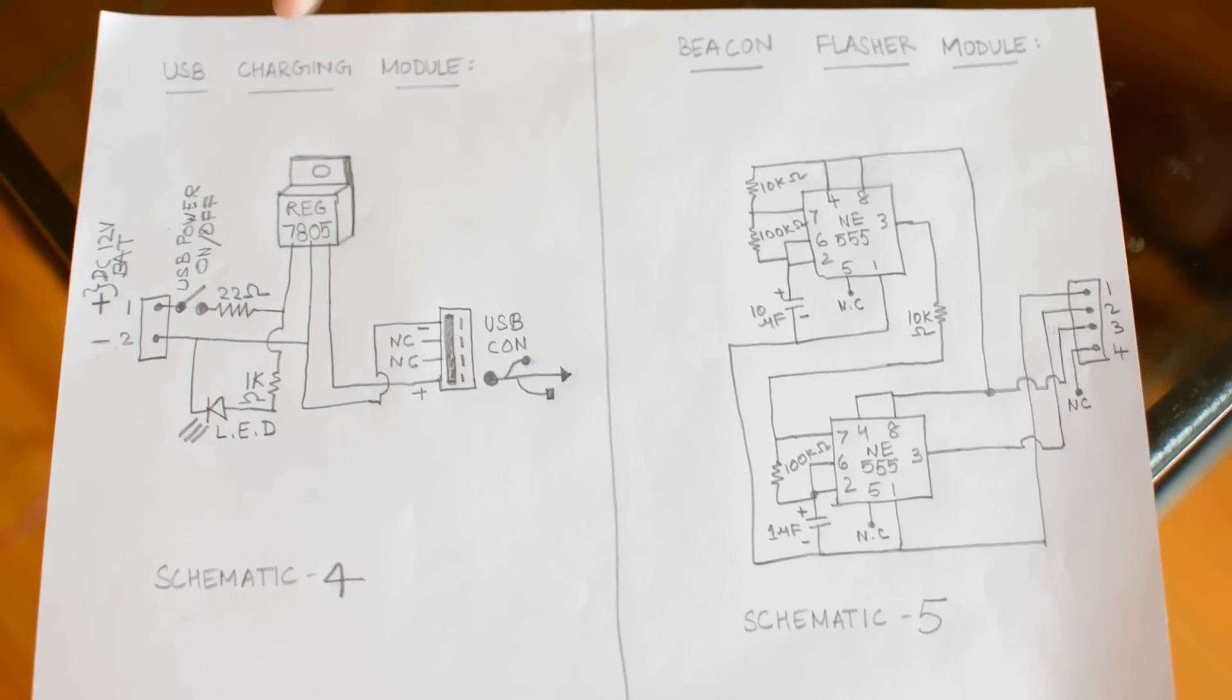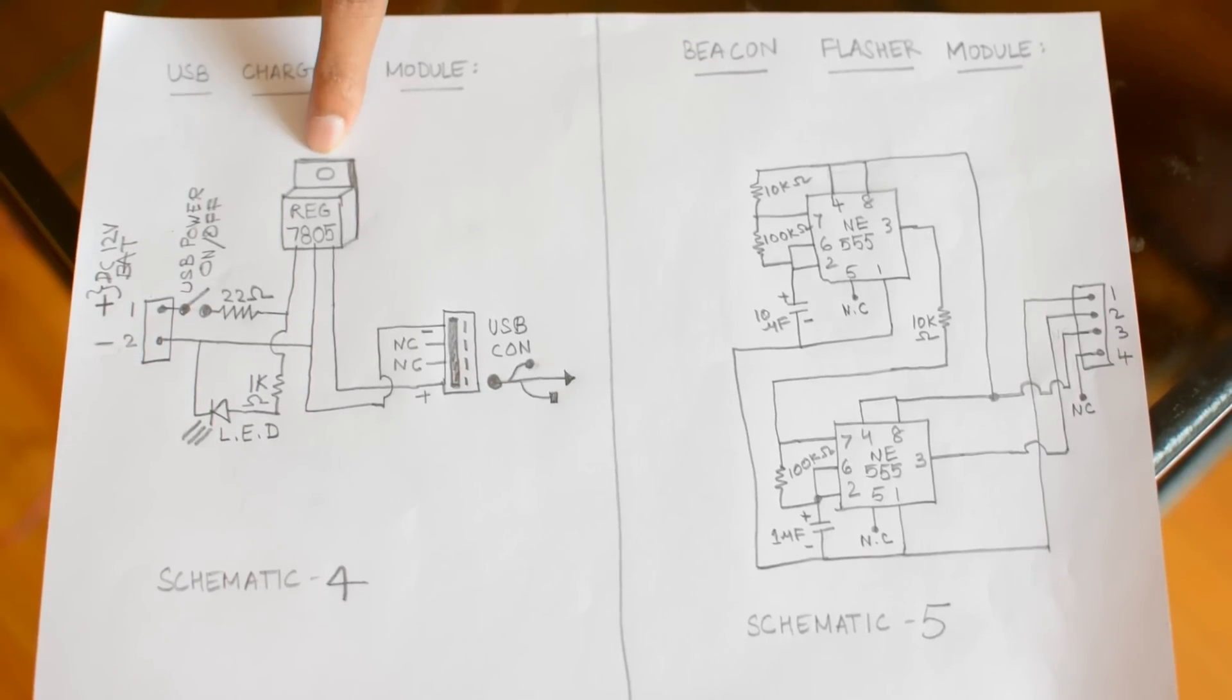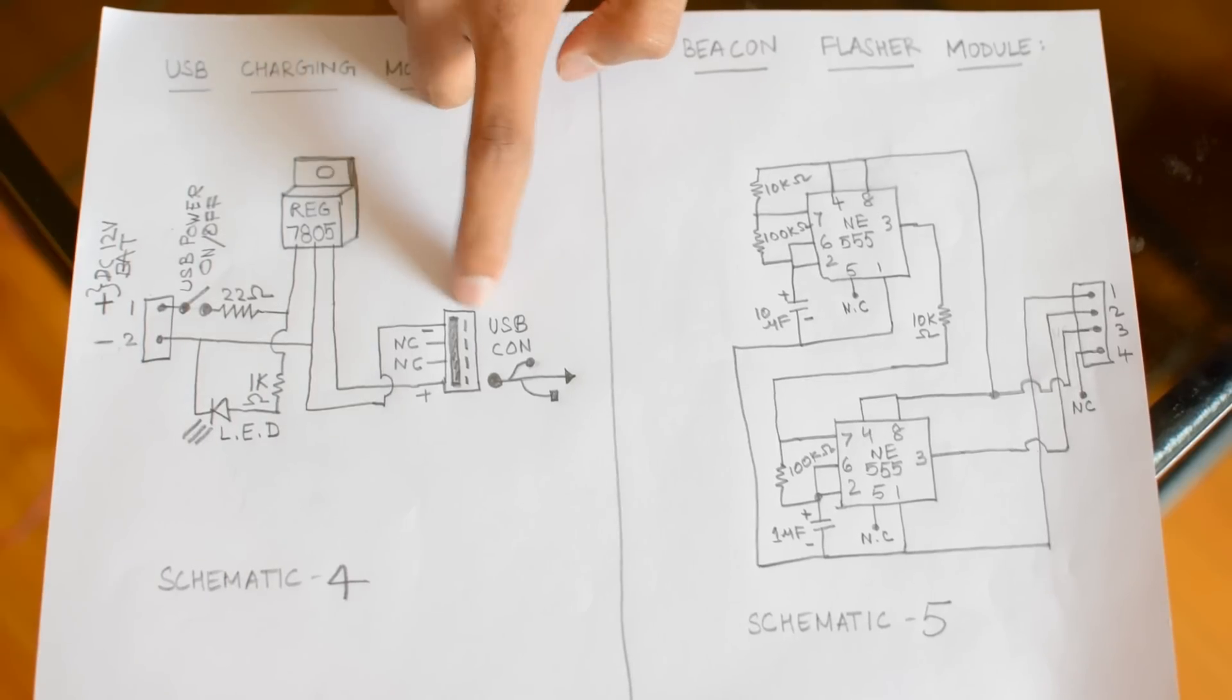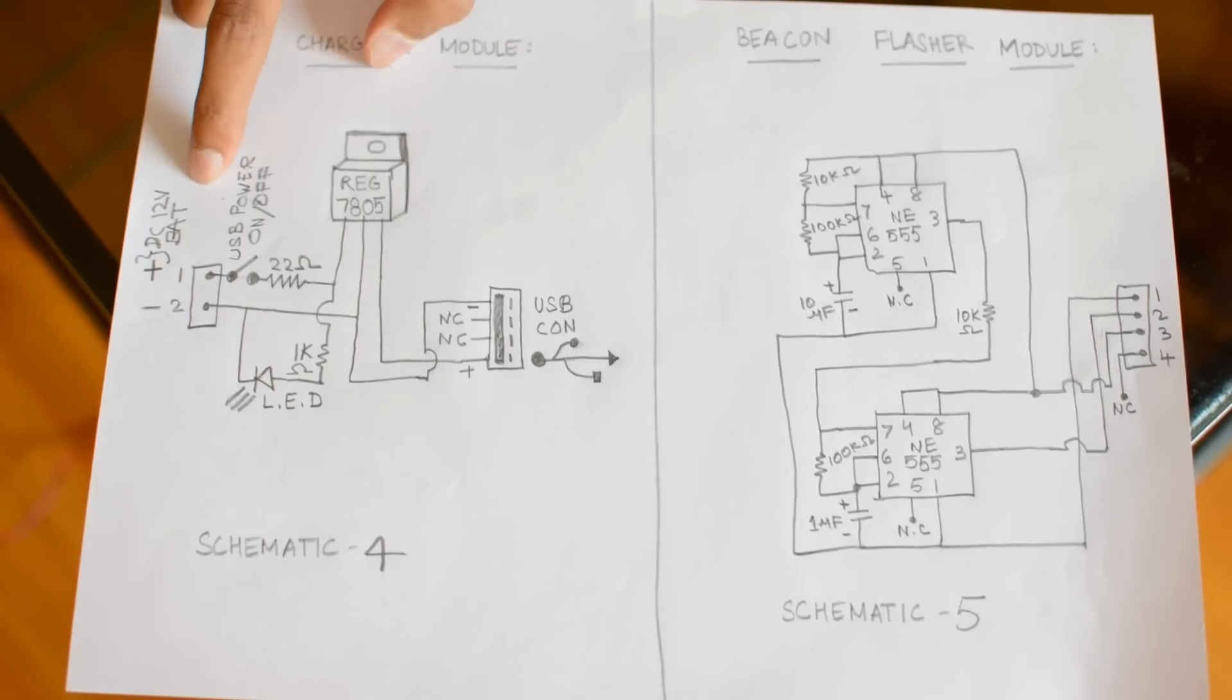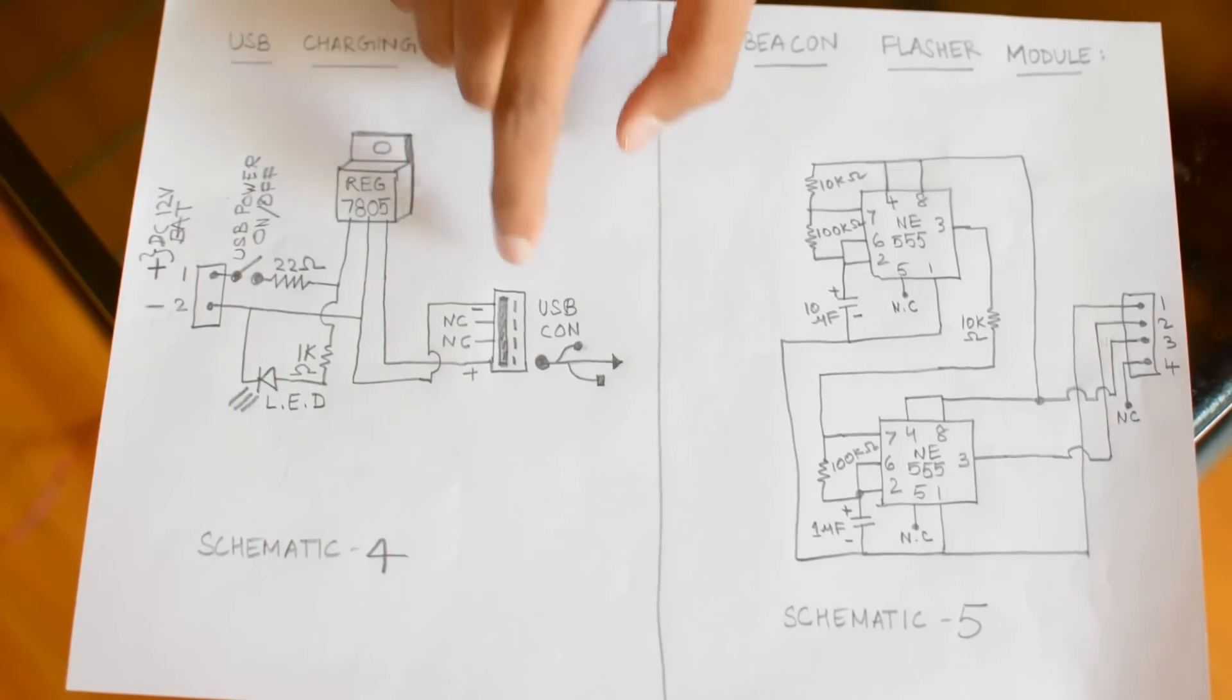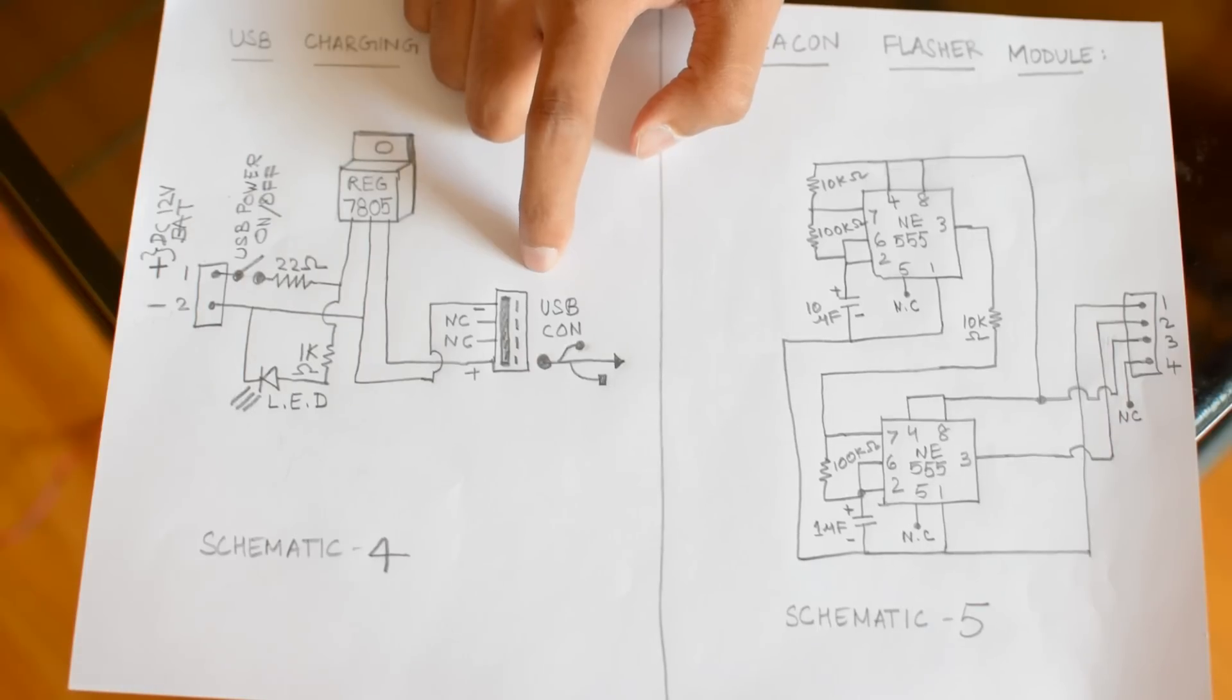This is the USB charging module schematic. You can see I have used a regulator IC 7805 to give the connections to the USB port. This is the USB port and this is the input USB connector, 2-pin connector. When you give 12 volts from the battery to this connector, this IC regulates the 12 volts to 5 volts and gives it to the USB which is used for charging mobiles, tabs, and walkmans.